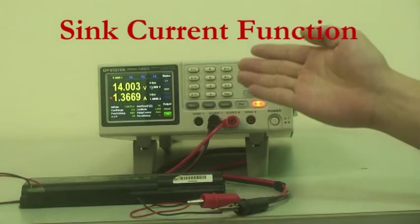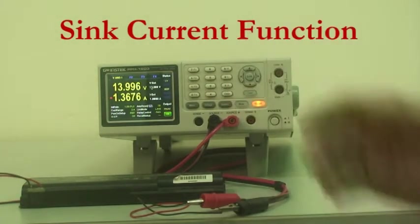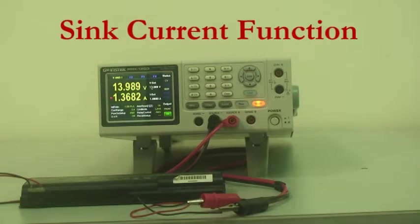Now the screen shows a negative current measurement. That means PPH1503 is bleeding the battery.